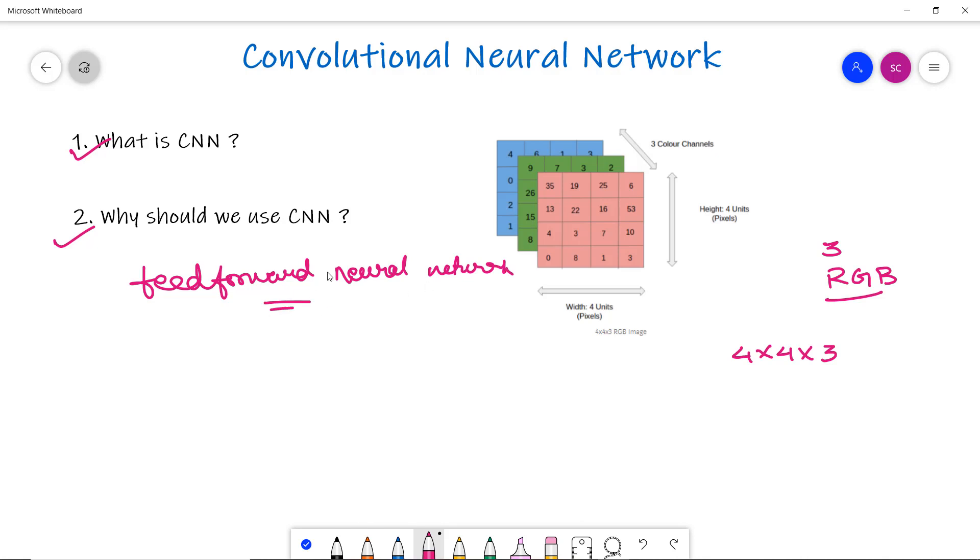In feed-forward neural networks, the pixels generate quite a large total number of weights, and it becomes unmanageable. Consider a sample image with pixel dimensions 1024. If we use the fully connected layer of the feed-forward neural network, what happens to the size of this image?